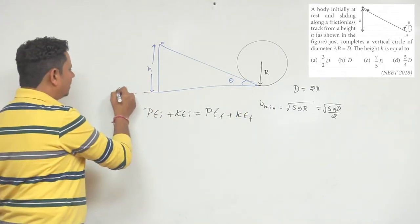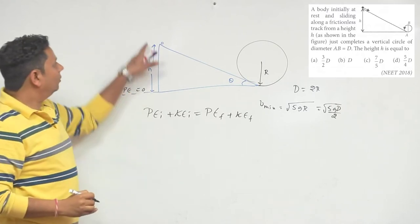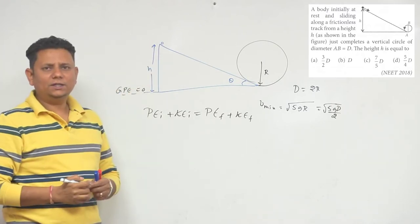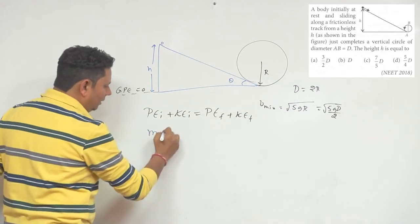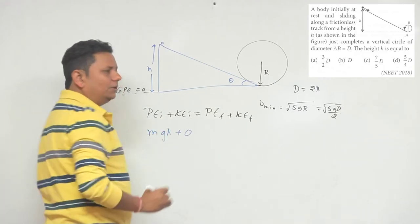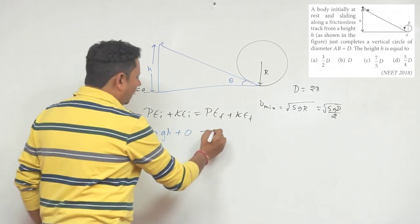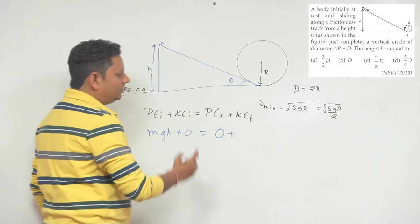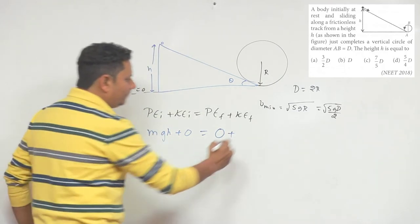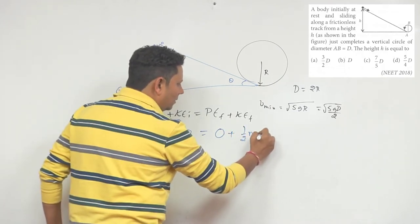If we take this location, we can write the potential energy initial value as MGH. Kinetic energy is 0 because it starts from rest. When it comes to this location, we can write the potential energy value here plus the kinetic energy, which will be half MV squared.